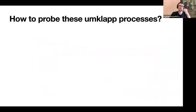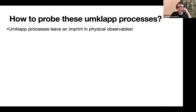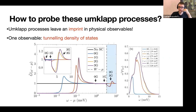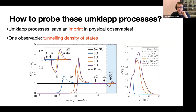The important question is: how could this ever be probed? The idea is that these umklapp processes leave an imprint in physical observables. One of these observables we focused on is the tunneling density of states. In an S-wave pairing, we always have a coherence peak corresponding to the size of the gap. But because of these additional features in the spectral function, there are new features that will appear in the dI/dV. These features occur at the characteristic frequencies corresponding to the umklapp processes, as encoded in our spectral function.